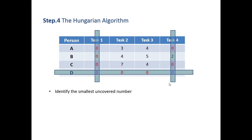For the Hungarian algorithm we identify the smallest uncovered number, which is 3. We subtract 3 from every uncovered number or element in this table. We then add that number to wherever there is a covered intersection. At the intersection of person D and task 1, there is an intersection of the two lines.